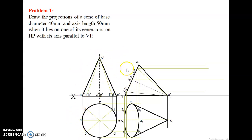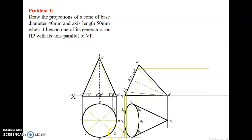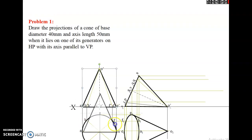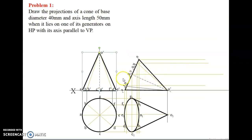Whatever we are seeing here is the front view, and whatever we are seeing here is the top view. Front view points should be written with a dash — A dash, B dash, H dash. Everything in the front view is written with a dash. So this is A dash, and this is B dash (H dash) — the bracket means it is a hidden point. Here it will be C dash (G dash), where C is visible and G is hidden. Here it will be D dash (F dash), and this is E dash. This will be O dash.